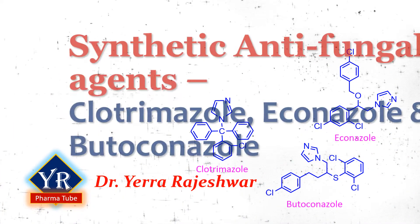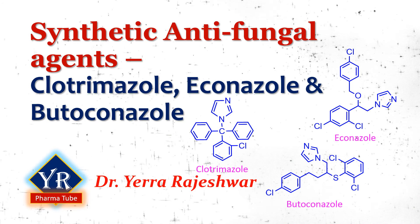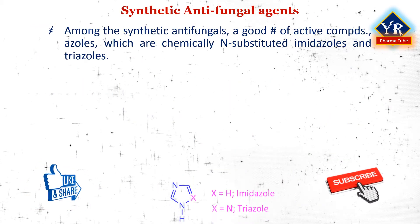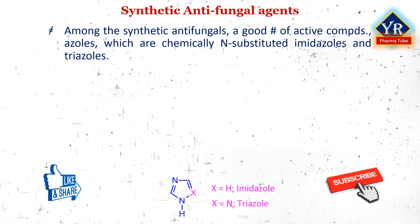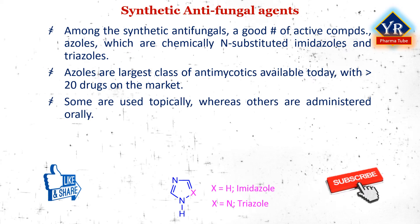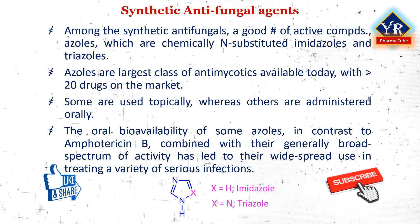In this lesson, we shall learn some of the synthetic antifungal agents such as clotrimazole, econazole, and butoconazole. Among the systemic antifungal agents, a good number of active compounds known as azoles have come up, which are chemically unsubstituted imidazoles and triazoles. Azole antifungal agents are the largest class of antimycotics available today with more than 20 drugs on the market. Some are used topically to treat superficial dermatophytic and yeast infections, whereas others are administered orally for the treatment of systemic fungal infections. The oral bioavailability of some azoles, in contrast to amphotericin B, combined with their generally broad spectrum of activity has led to their widespread use in treating a variety of serious infections.